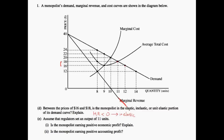Now let's look at part E. Assume that regulators set an output of 11 units — is the monopolist earning positive economic profit? Let's look at where the price is being set. The price, or the demand, is going to be set at P equals average total cost. Because we're setting price equal to average total cost, we will not be generating positive economic profit, because positive economic profit includes both the implicit and explicit costs associated with producing this good. When we set price equal to average total cost, we are generating no positive economic profit.